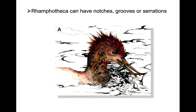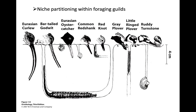Birds don't have teeth, but if you look at some birds, their rhamphotheca has notches and grooves or serrations that give it a teeth-like function, as you can see in this merganser. Even within a general bill morphology, in a foraging guild — a group of birds that have very similar diets — they can subdivide that resource because of different sizes and shapes of bill. A curlew with a really long curved bill ranges in different thicknesses and lengths to something like a little ringed plover, allowing all of these to exist in the same habitat and reduce competition for food resources because they're going after slightly different invertebrate prey.